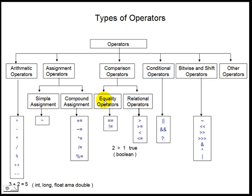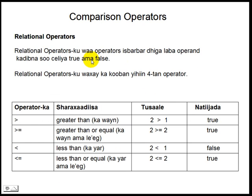Comparison operators ka waxaa loola qaybsha laba qaybood oo kala ah relational operators iyo equality operators. Relational operators ku wa operators isbarbar ligah laba lambar ka dibna so'iliyya true ama false. Relational operators ku waxay ka kooban yihin afar operator. Tableka wahaan idhinko so'banaynay ligahy relational operators ka sharrahaad doodha, tusalayaasha, iyo natiijooyin ka sobaha tusalayaashaas. Operator kan u waha rraya magiciisu waa greater than operator, wuxuna ku yahay kawwain.